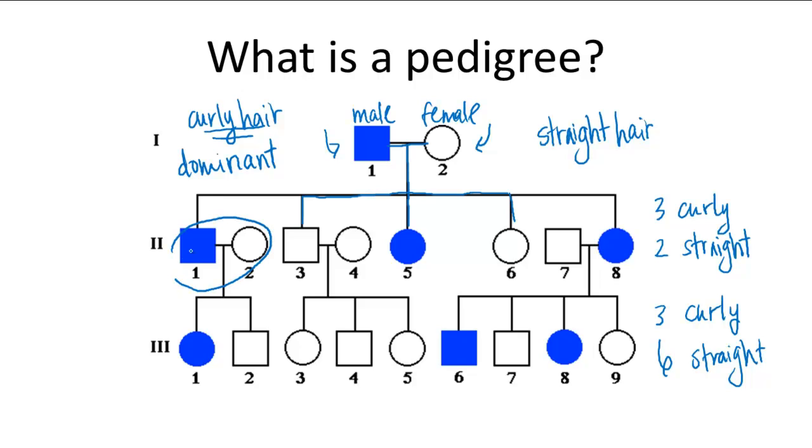So in this pairing, in the first original pairing, in this pairing. Whereas the one couple that has both straight hair, all their offspring only have straight hair.